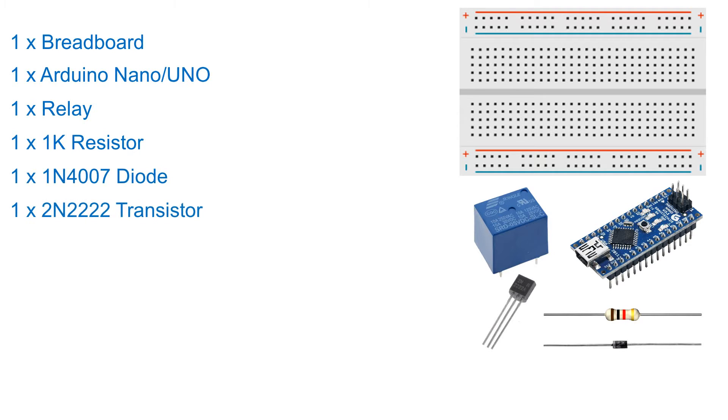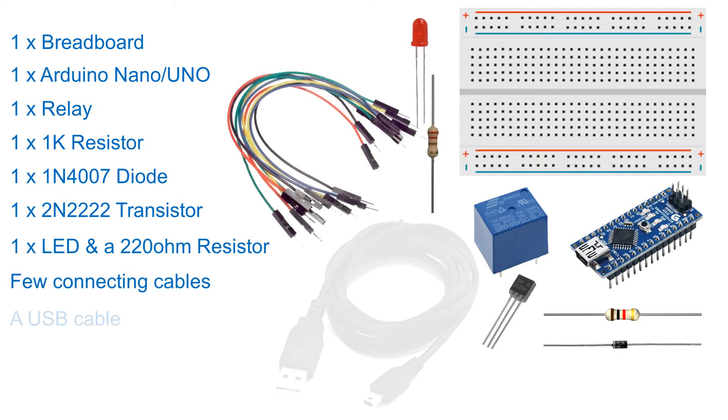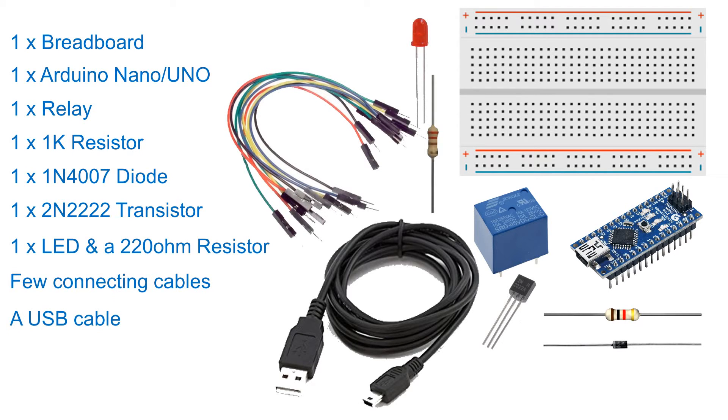We also need a 1N4007 high voltage high current rated diode to protect the microcontroller from voltage spikes, a 2N2222 general purpose NPN transistor, a LED and a 220 ohm current limiting resistor to test the connectivity, a few connecting cables, a USB cable to upload the code to the Arduino, and some general soldering equipment.